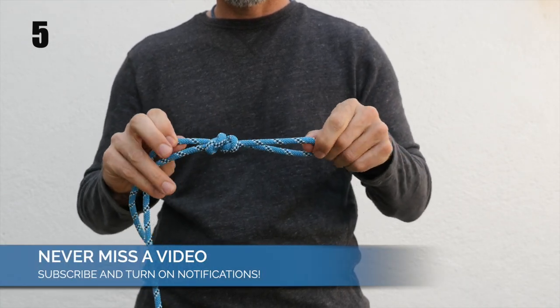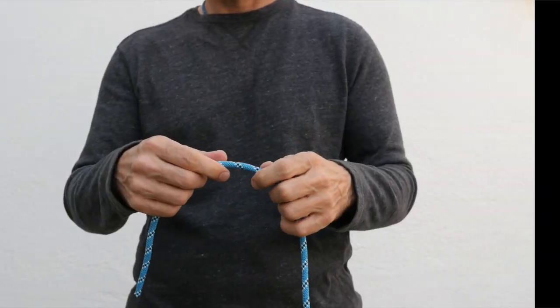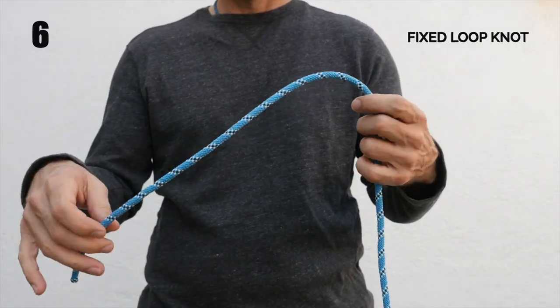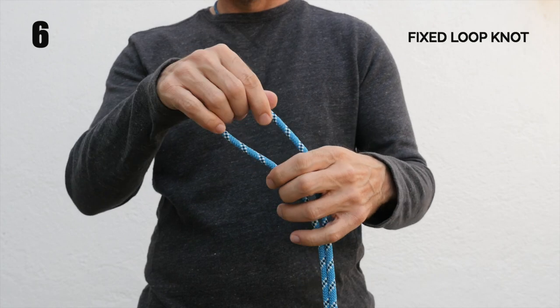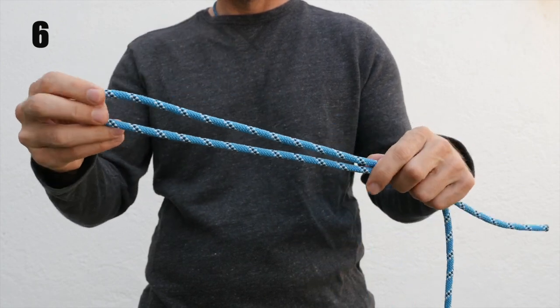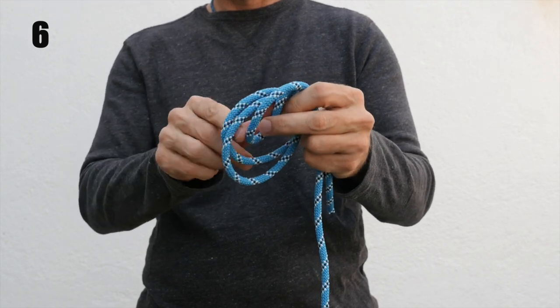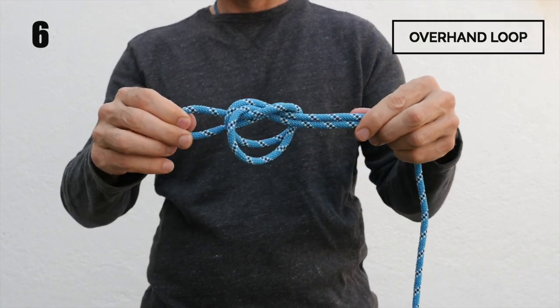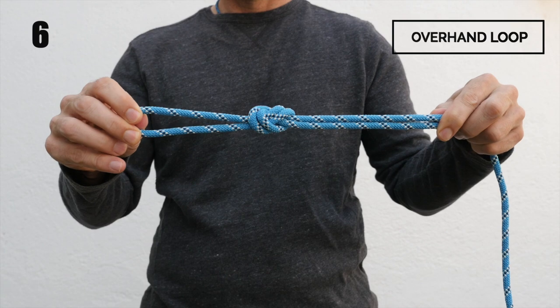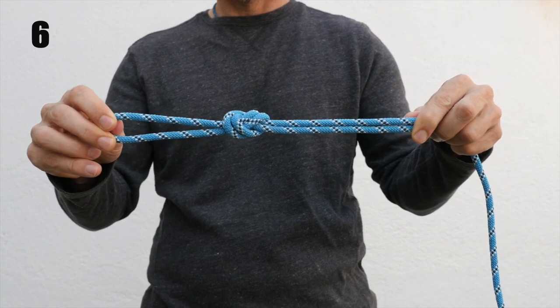But if you want a fixed loop knot, you can also tie one with the overhand by simply folding your rope so that it's doubled up. Remember, this is called a bite. And then tying another overhand knot. This is called the overhand loop, and it's as easy as it gets, but the problem is that this knot is sometimes a bit difficult to untie.